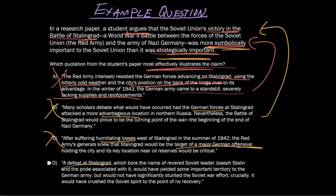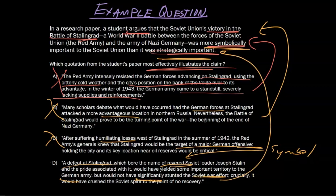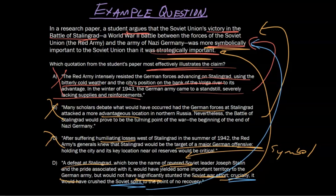Now: a defeat at Stalingrad, which bore the name of a revered Soviet leader — revered means it's probably important, this is symbolic. It would have yielded some important territory, but would not have significantly stunted the war effort — which means it was not strategically important. There's our claim. Crucially, though, it would have crushed the Soviet spirit — again, symbolically. So we see our answer is D, and now we're going to move on.